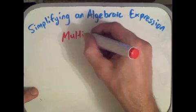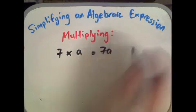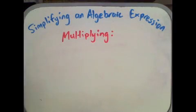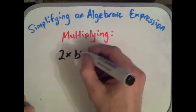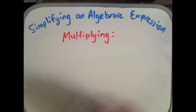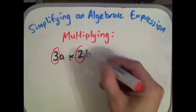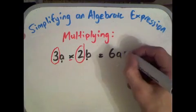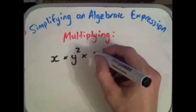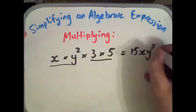Now let's look at multiplying algebraic expressions. 7 times a we simply write as 7a — remove the multiplication sign and bring it together. 2 multiplied by b squared multiplied by c is just 2b squared c. For 3a multiplied by 2b, we multiply 3 and 2 to get 6, then tag on a and b: 6ab. For x multiplied by y squared multiplied by 3 multiplied by 5: 3 times 5 gives us 15, then we put xy squared at the end.